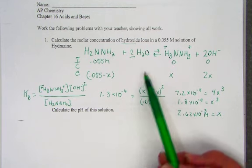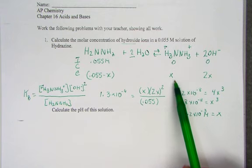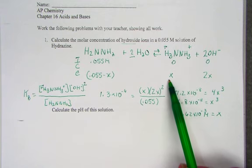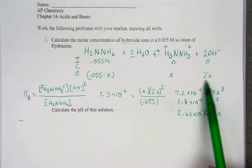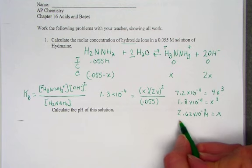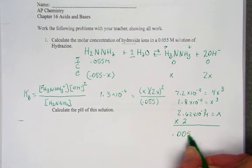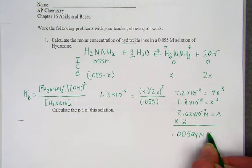Keep in mind, we were asked to solve for hydroxide ions. X represented the ion for the protonated hydrazine. The value of 2X represented the concentration of hydroxide. So I need to double what I found for the value of X, and when I find that, it's 0.00524 molar, the concentration of hydroxide.